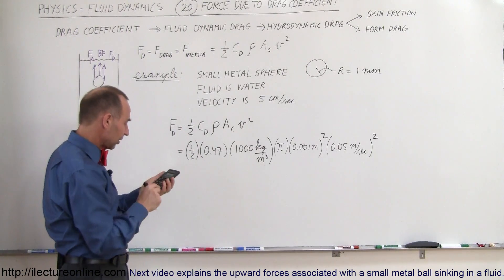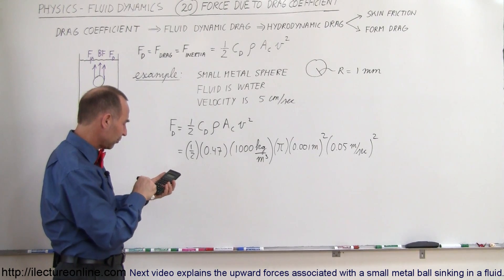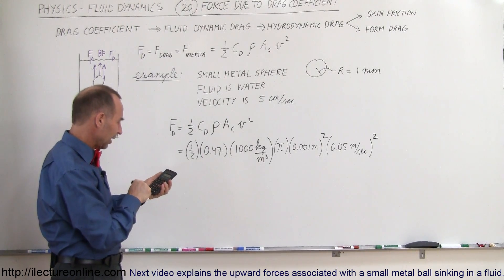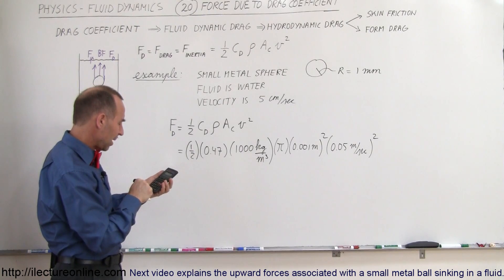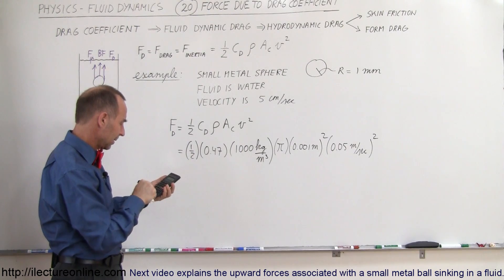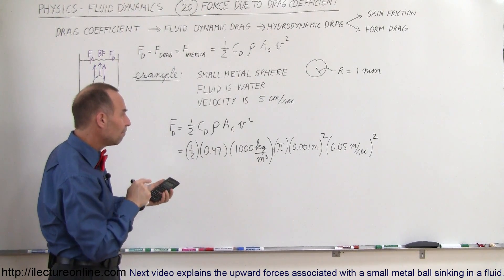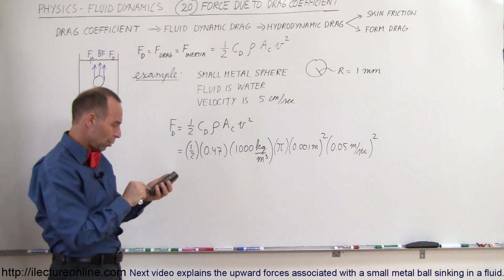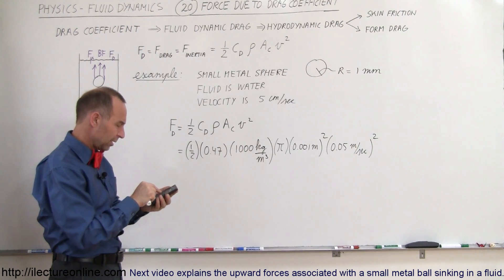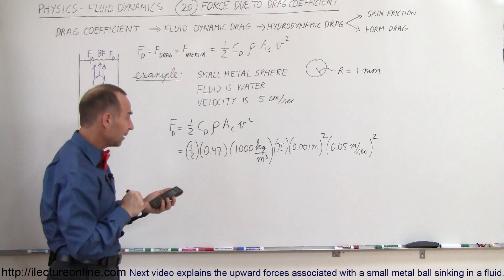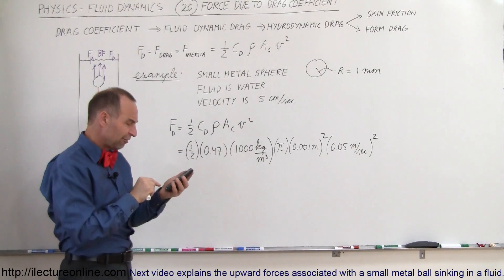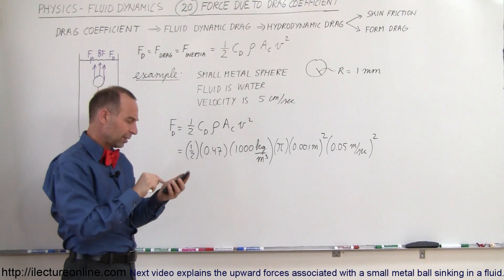So go ahead and work all that out, so we have 0.5 times 0.47 times 1,000 times pi, times 0.001 squared, 0.001 squared times, and now we have 0.05 squared, 0.05 squared equals...